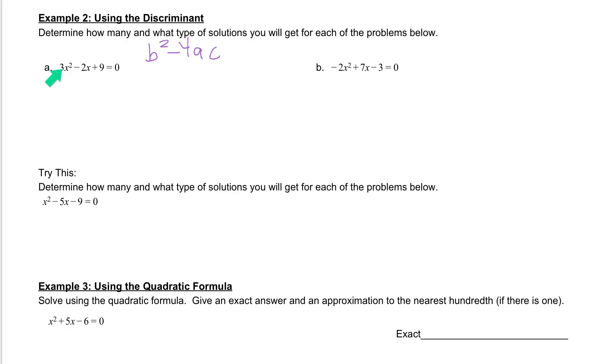The a value is always the number in front of the x squared, so we know for this problem a is equal to 3. b is always the number in front of the x, so here b is equal to negative 2. And our c value is always our constant, so in this problem our c value is equal to 9.